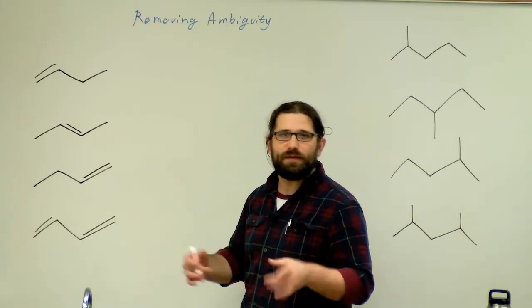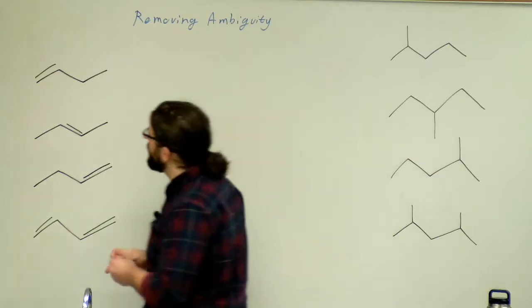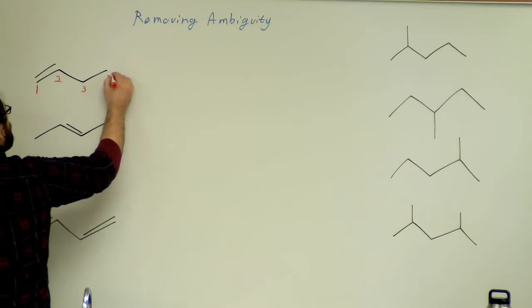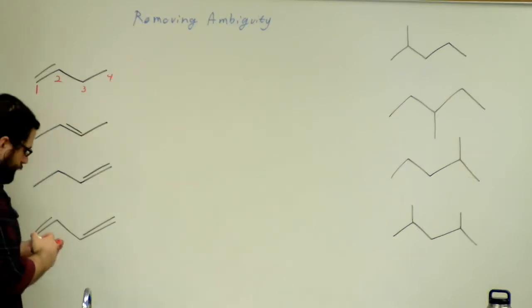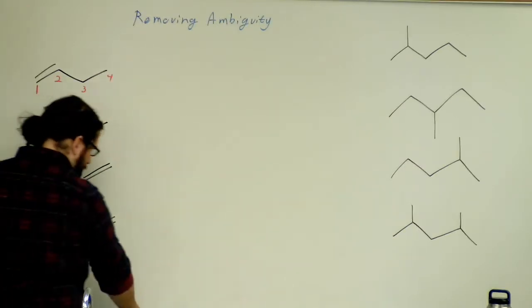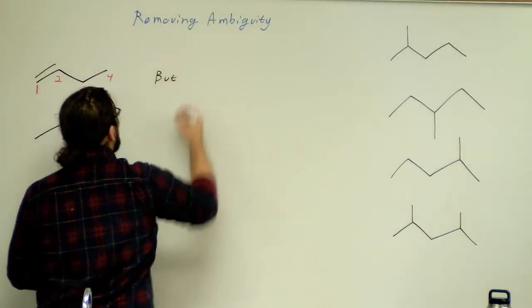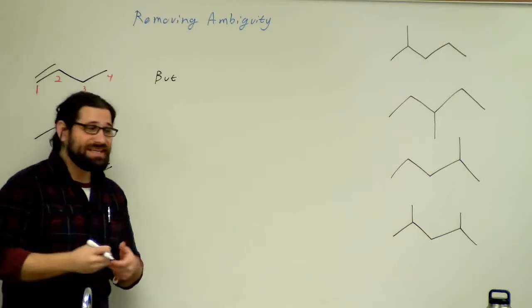Sometimes it'll go right to left, and we'll see when in just a minute. So I start here with number one, then two, three, and four. I can see that this is a four carbon chain that's going to be bute. I have a double bond, that means it's going to be a butene.